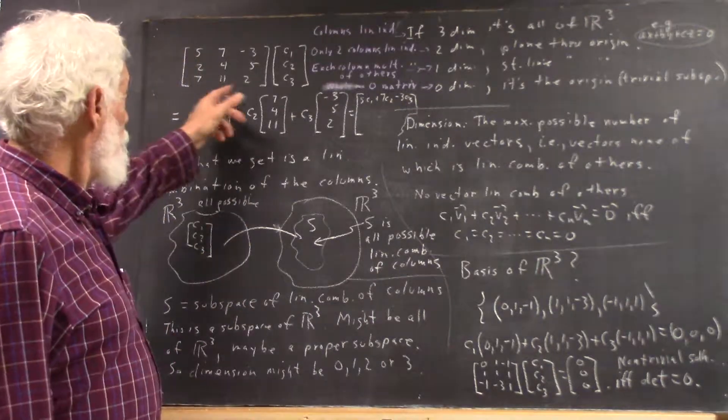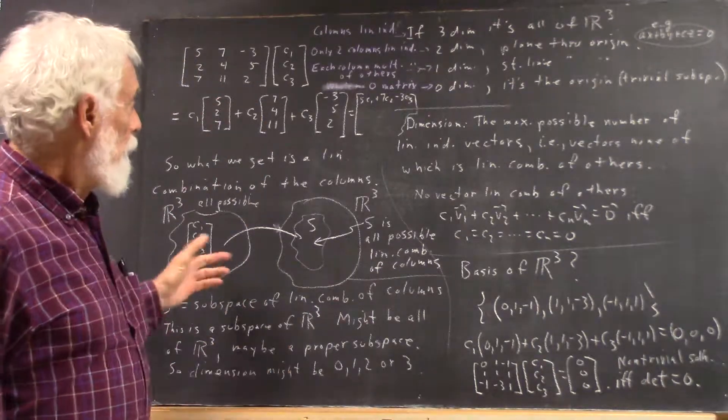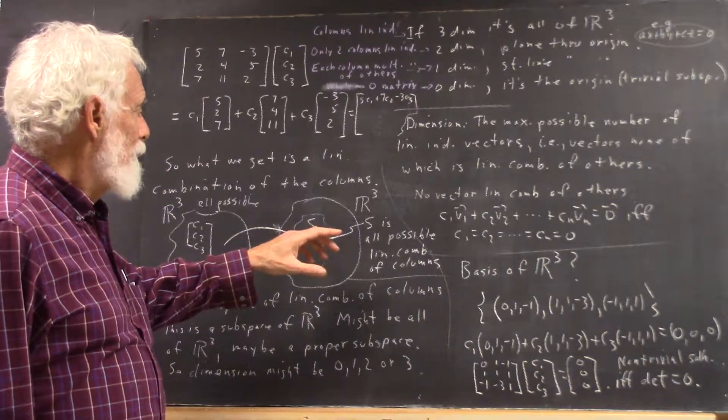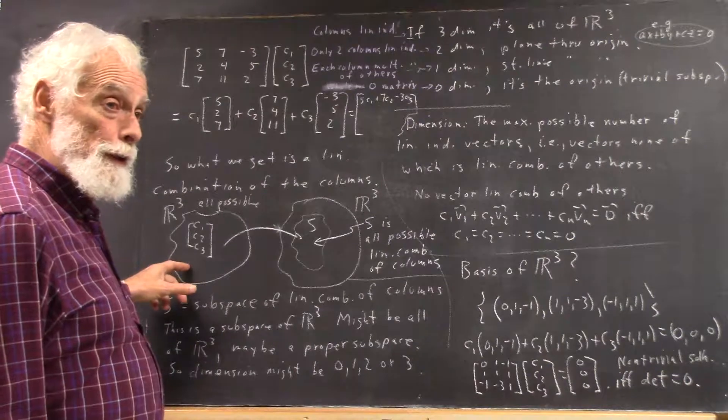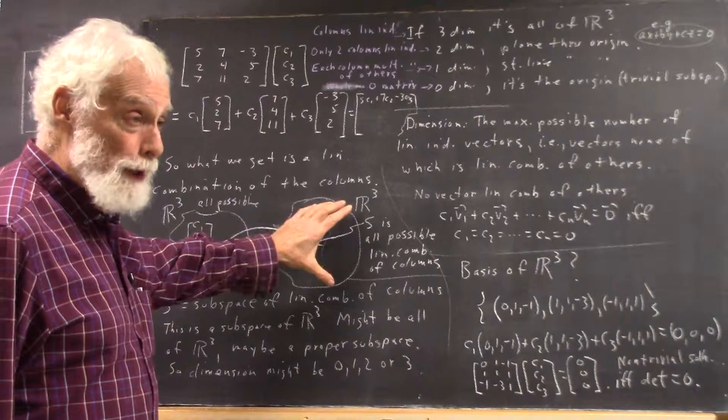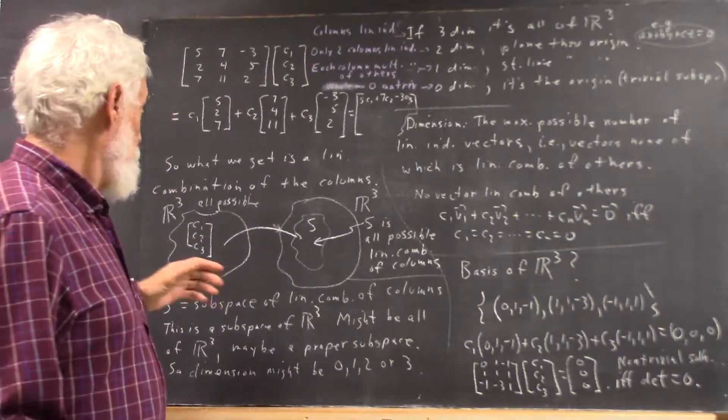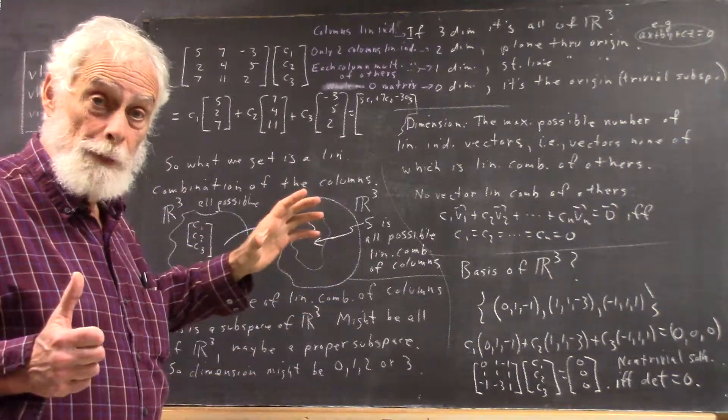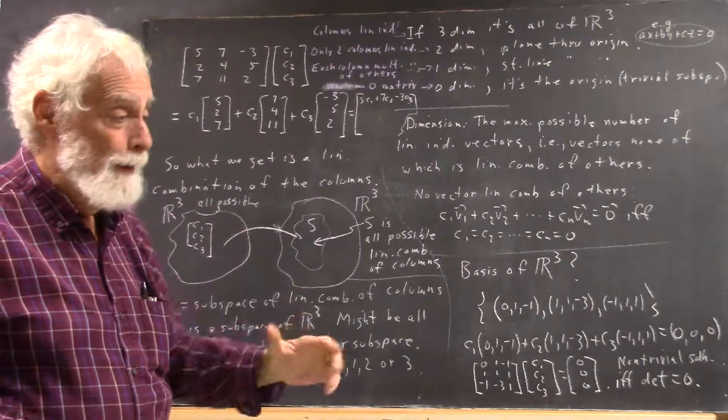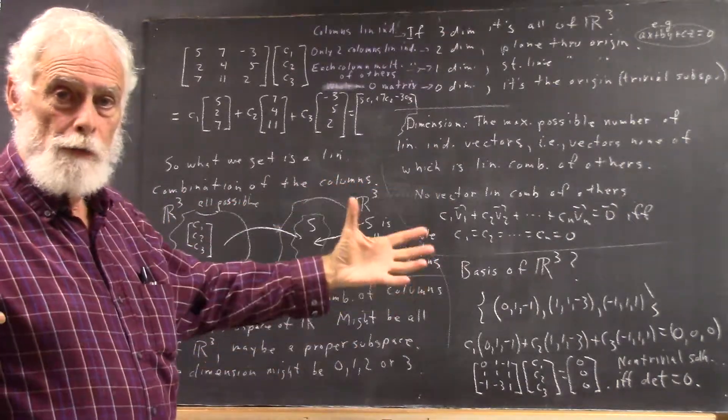And then if all three vectors are linearly independent, then when you map all the points from here, you're going to get all the points in R3 here. If you map every point in R3, you will get every point in R3, so that the whole three-dimensional space won't collapse onto a line. It won't collapse into a plane. It just gives you all of R3.